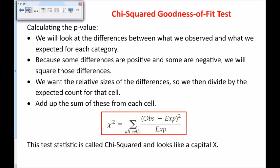Because some differences are positive and some are negative, we square those differences — this is very much like what we did for lines of best fit. We want the relative sizes of the differences, so we divide by the expected count for that cell, add that up for each cell, and get the chi-squared test statistic. It's written like a capital X but it's called chi-squared.